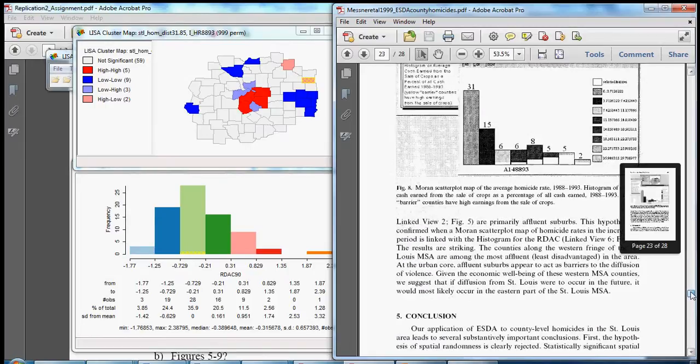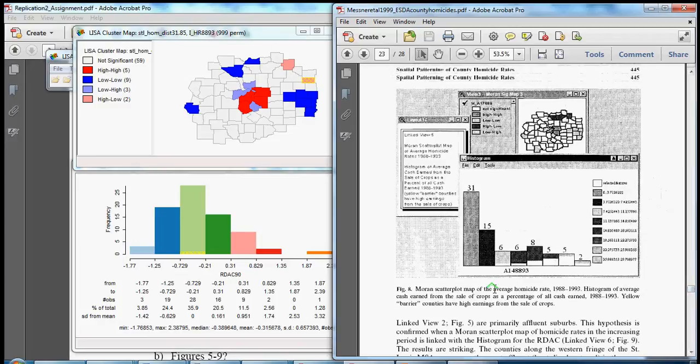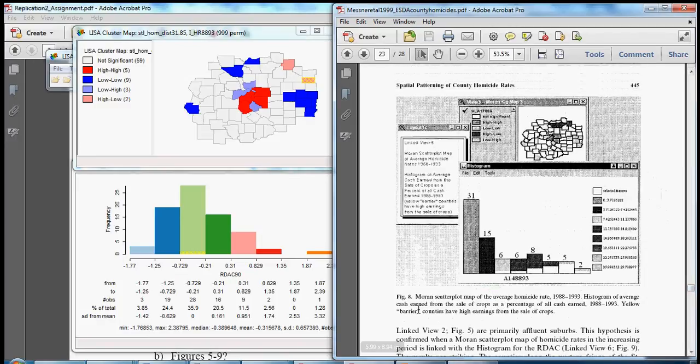Again, one of the interesting things that you could do as an extension of this replication is to collect data on cash from crops from another source and merge it with this data, or collect a proxy variable that captures that kind of rural environment or captures rurality farmland, as argued by Messner et al., and that might get at this notion of barrier counties. So hopefully this is useful and a nice refresher on some core concepts and tools in spatial analysis, especially the exploratory techniques. Thank you.